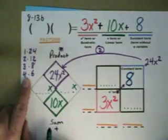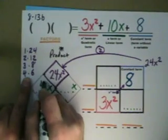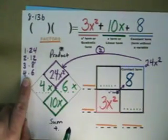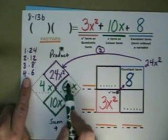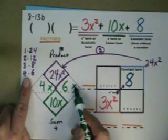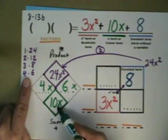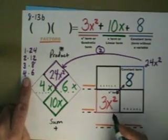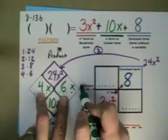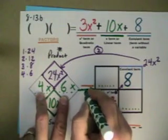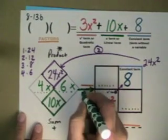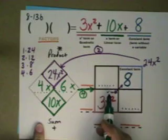They both have to have x. So I'm going to try 4x and 6x. Let's see, 4 times 6 is 24, x times x is x². That's good. 4x + 6x is 10x. Now, these are the two numbers that are going to go over here.